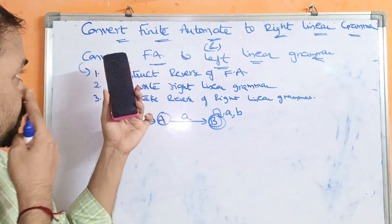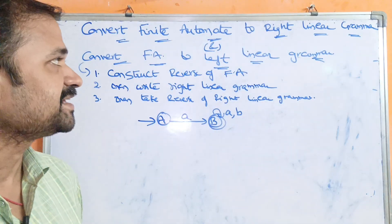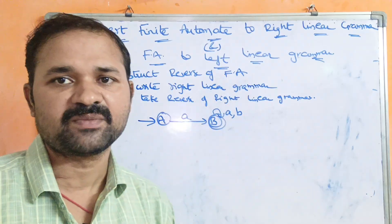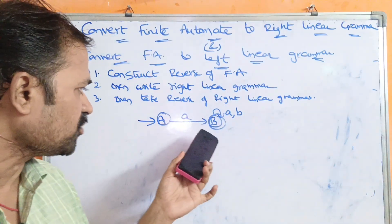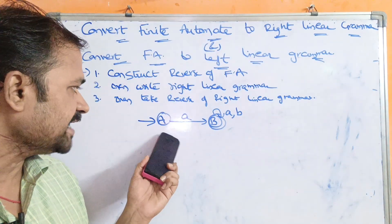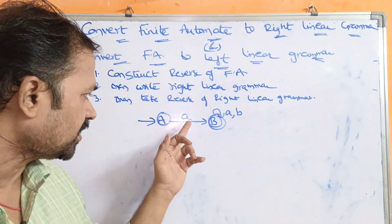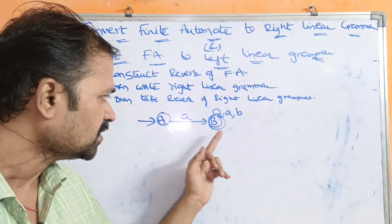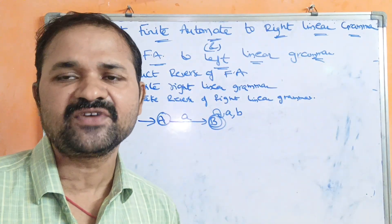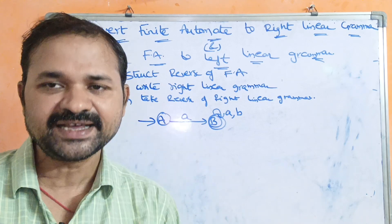Let us discuss the conversion of finite automata to right linear grammar and to left linear grammar. This is the finite automata given — we have two states: a is the initial state, whereas b is the final state. On input 'a', a goes to b; on inputs a or b, b stays at b. First, let us convert the finite automata into right linear grammar.